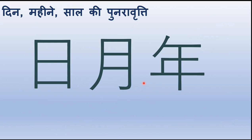Din, mahine, saal ki punaravritti. Pichhle part mein humne ye soori ya din ki kanji seekhi thi. Uske baad ye chaand ya mahine ki kanji, aur aaj humne ye saal ki kanji seekhi. To is tarah se din, mahina, aur saal — jab hum koi taareekh ya date likhna hoga Japanese mein, to in teeno chinhon ka prayog hum karenge. Toh aane waale part mein jab hum dates ki baat karenge, us samay hum in chinhon ka khoob prayog karenge.